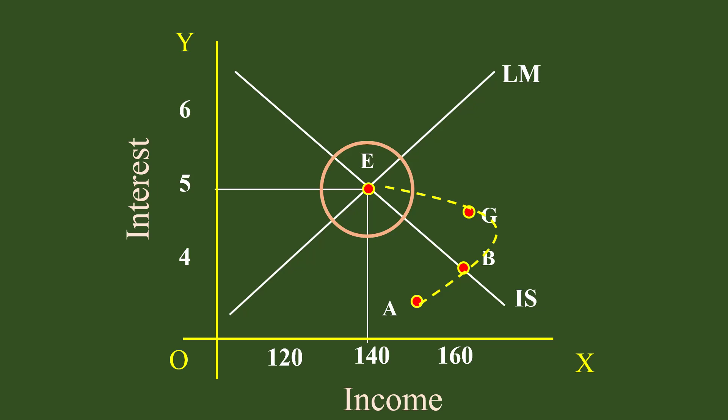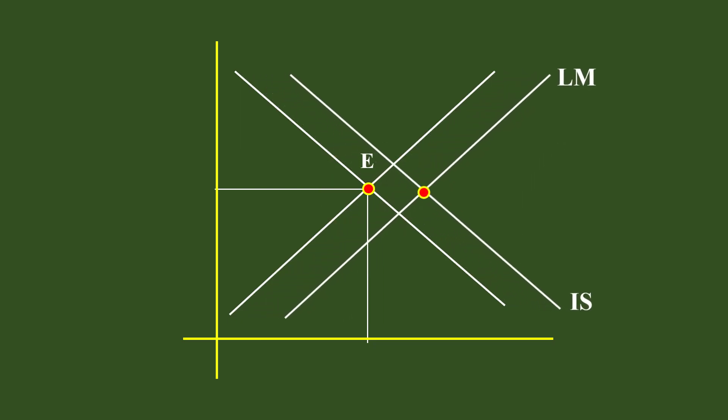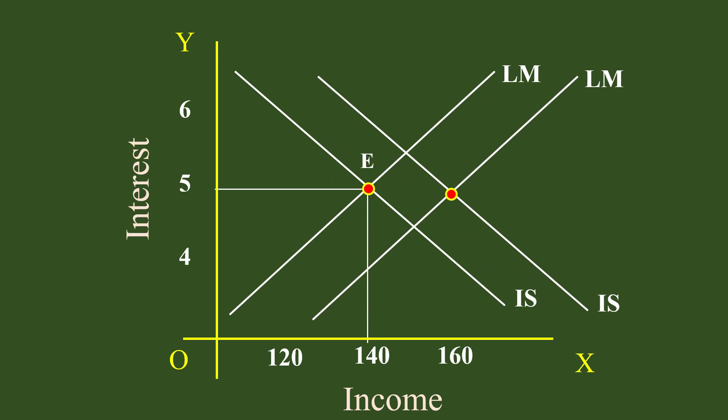This is a stable equilibrium. So long as the variables acting on the IS-LM curves are unchanged — that is, the two curves do not change their positions — equilibrium is maintained. Any shift in the curves will affect the original equilibrium. We will see the effect of shifts of these curves on equilibrium interest and income in the coming videos.